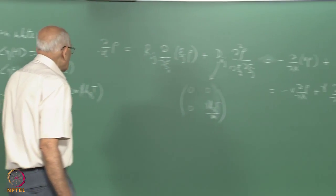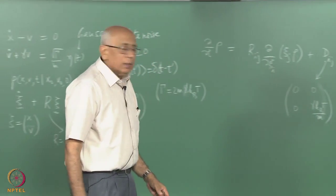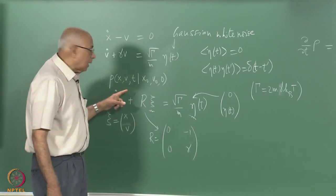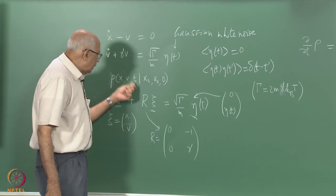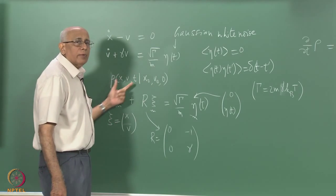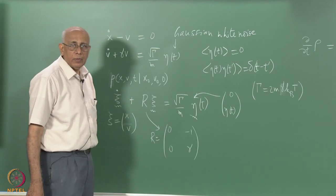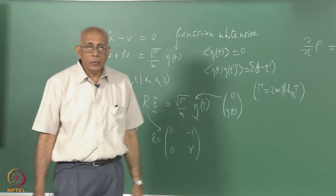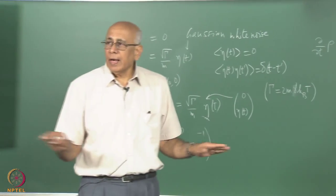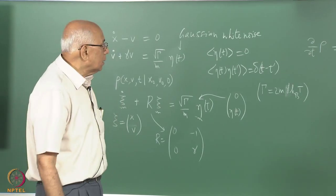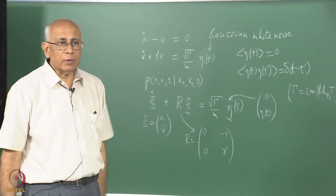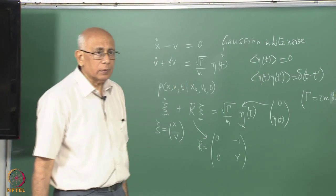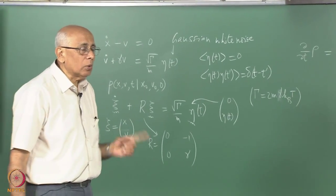The solution depends on the initial condition. At t=0, rho(x, v, 0 | x_0, v_0) = delta(x - x_0) delta(v - v_0). With that initial condition and boundary conditions that rho vanishes as x and v tend to infinity, you get Gaussians as the solution — a bivariate Gaussian both in x and v, with terms like exp(-x²), exp(-v²), and cross terms exp(+xv).